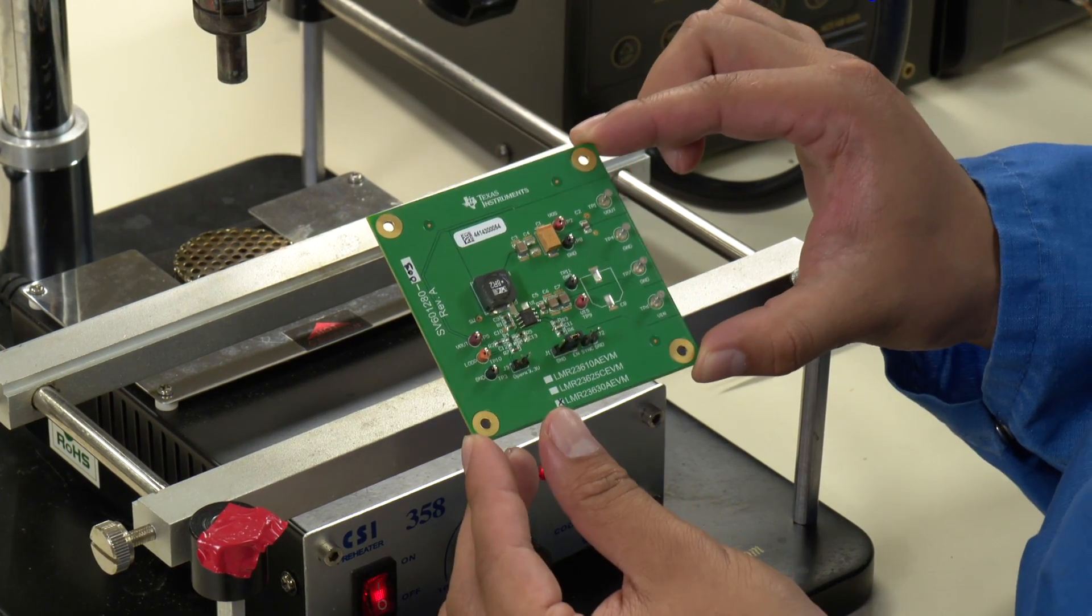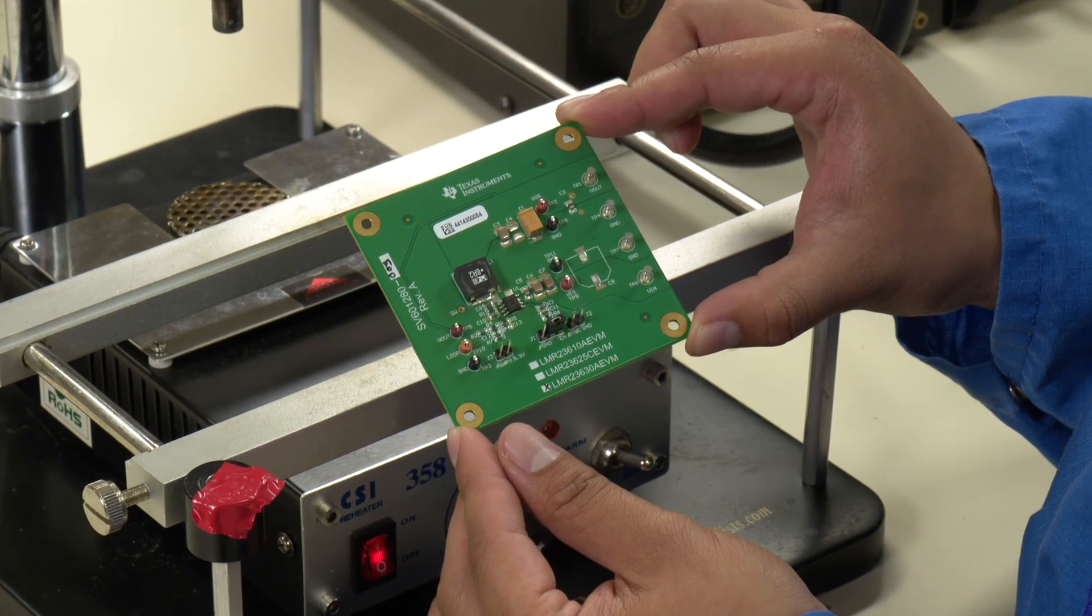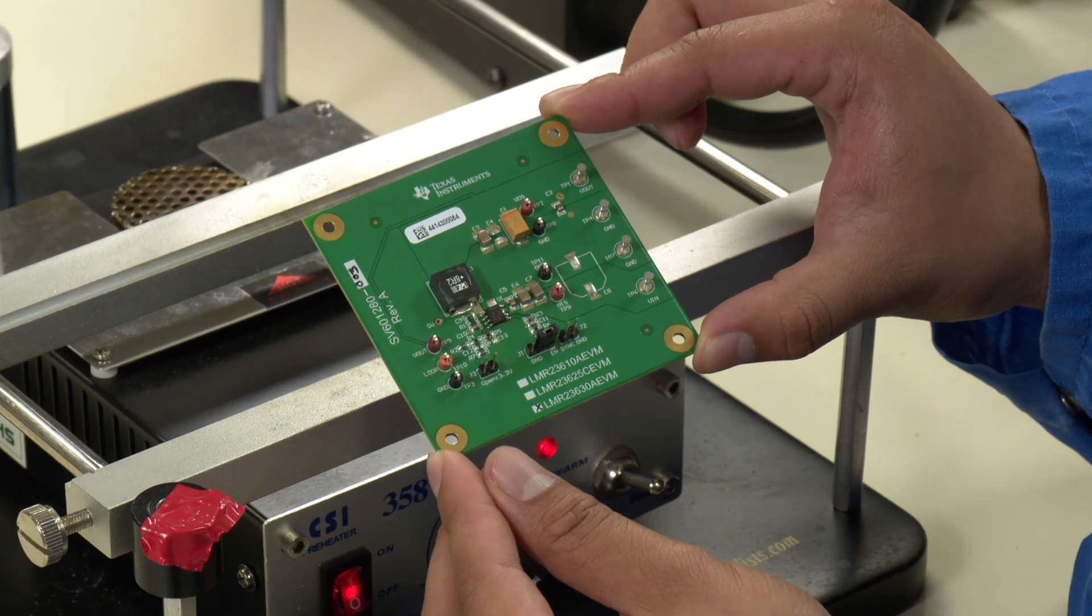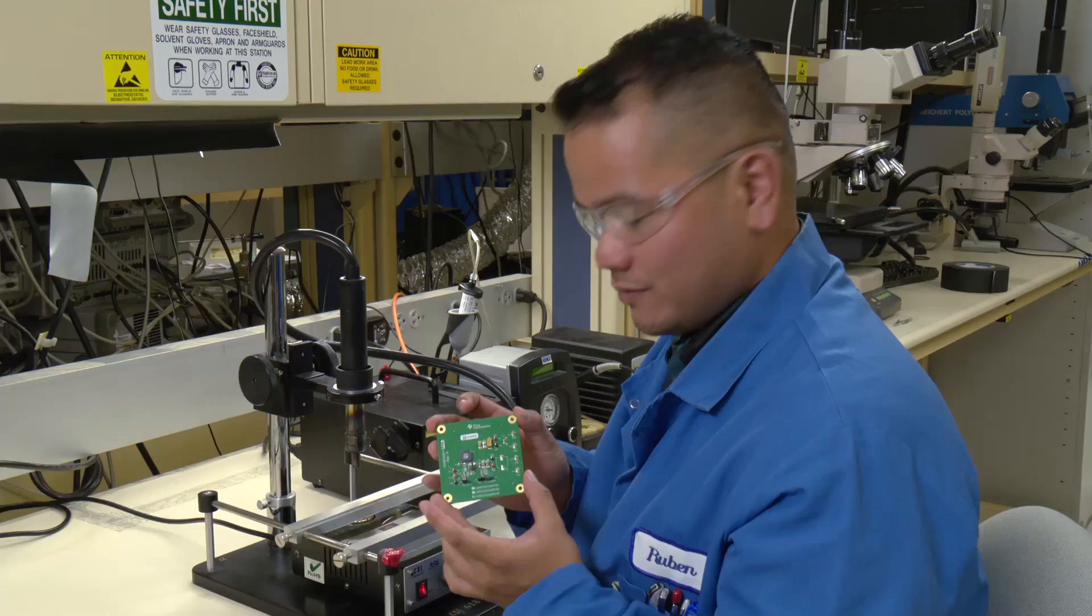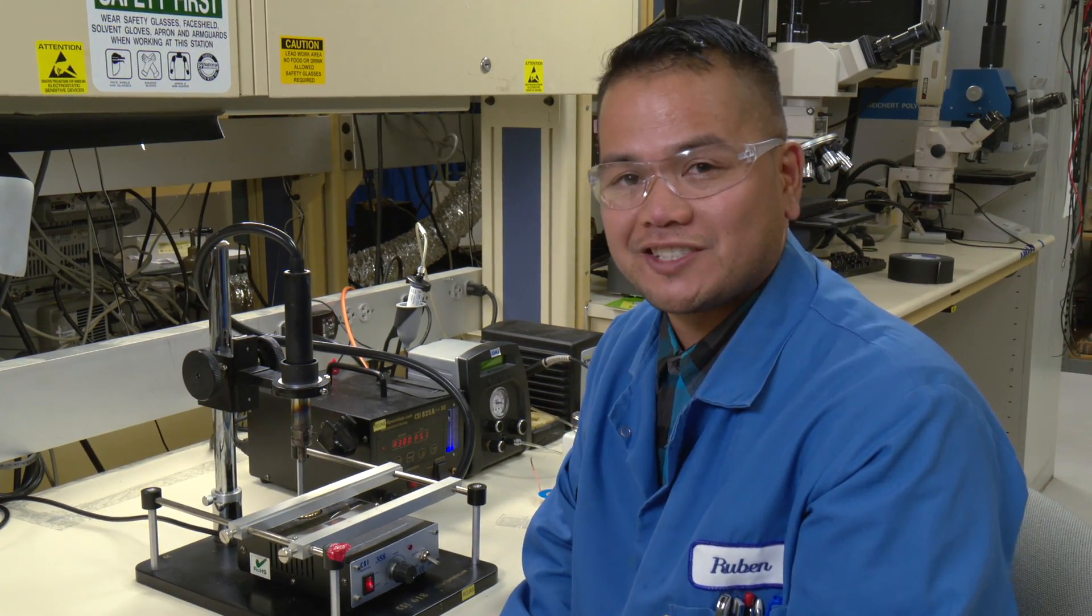As you can see, these are the advantages of having a SOIC part during prototyping. With its wider pitch and exposed leads, the manufacturing process is made simple. Well, that's it for this demonstration. Thank you very much.